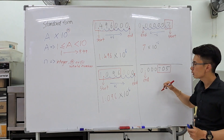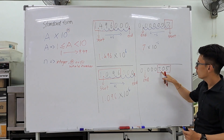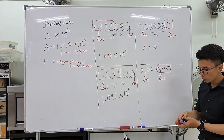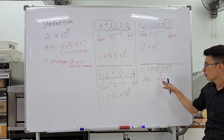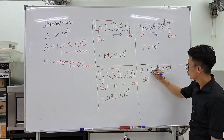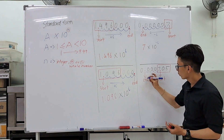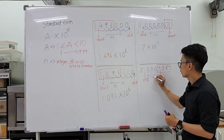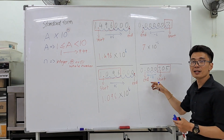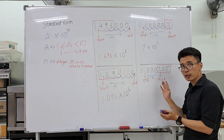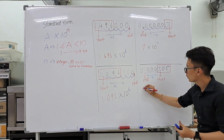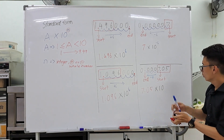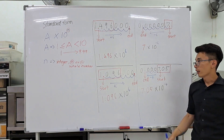From the box of 705, we place the decimal point to satisfy the range, giving us 7.05 — that is our starting point. We then count the steps from start to end: one, two, three, four — four steps to the left. Since we are going left, it's a negative number. So we write this in standard form as 7.05 × 10 to the power of negative four.